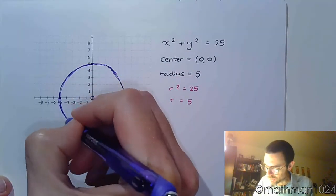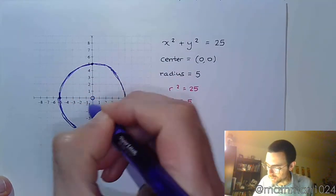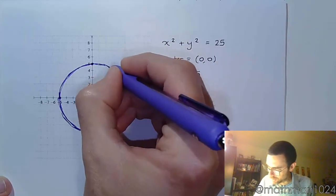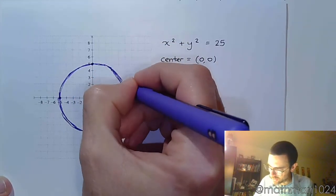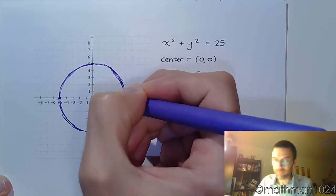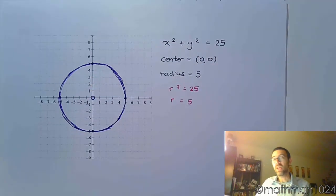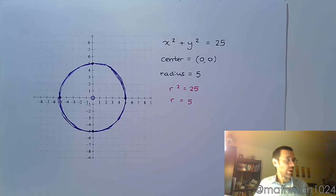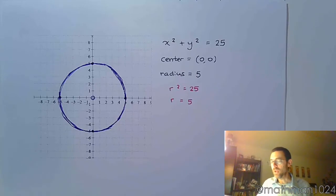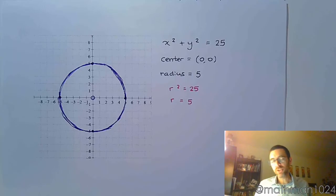Definitely not the prettiest circle you're ever going to see, but hopefully you can agree that it's, as they say, good enough for government work. In the next few videos, we're going to run through a few different examples — some with center-radius form and some with general form.